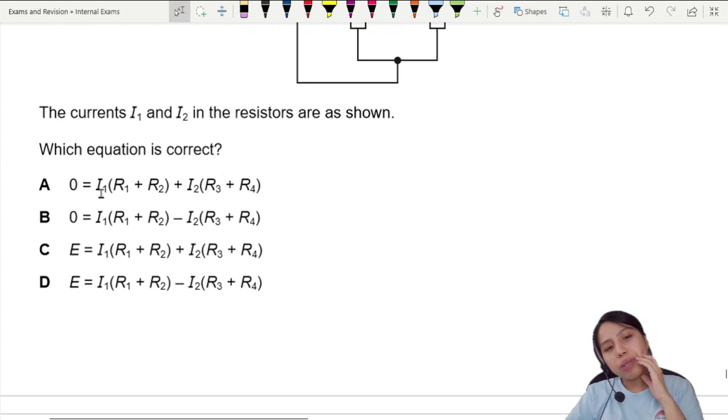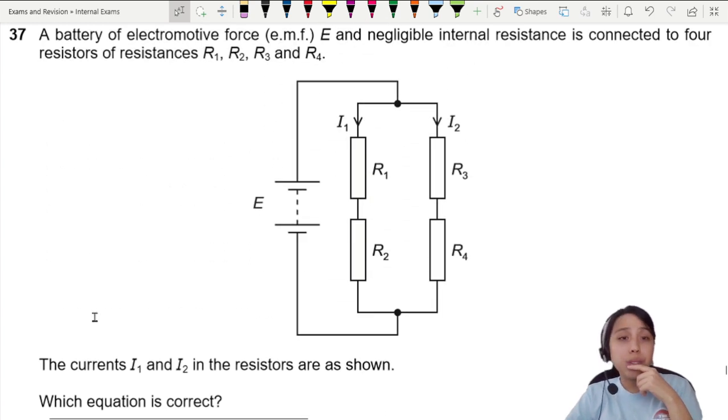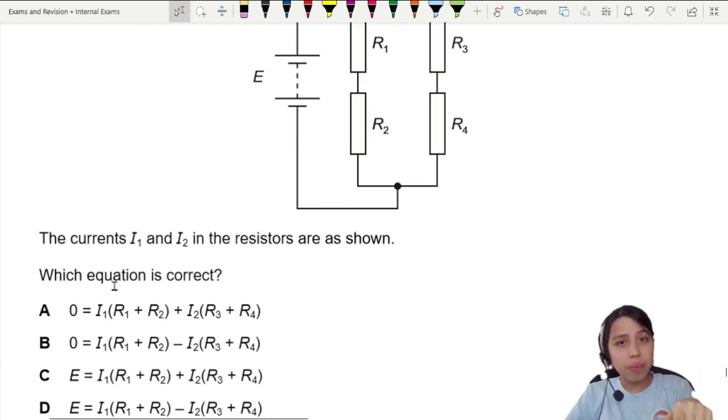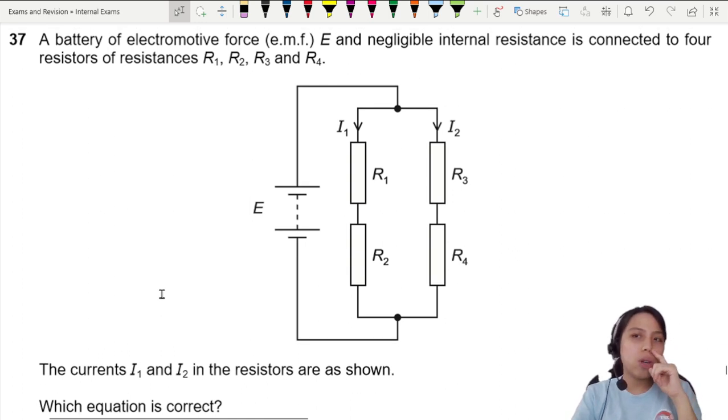This looks like some kind of Kirchhoff equation. IR, IR, IR everywhere. That's usually the case if in a DC kind of question you see an equation. Good chance you probably have to do Kirchhoff's law. Which law though?